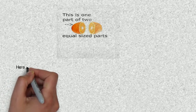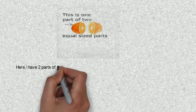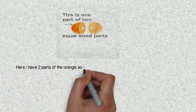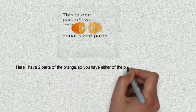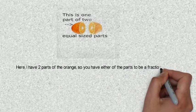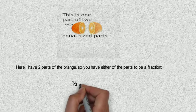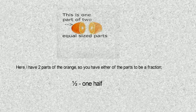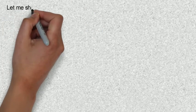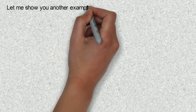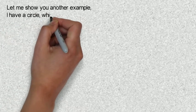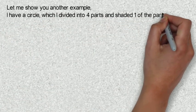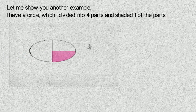Here I have two parts of an orange, so you have either of the parts to be a fraction, that is one over two which can also be called one half. Let me show you another example. I have a circle which I divided into four parts and shaded one of the parts.